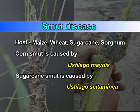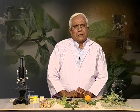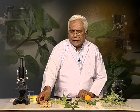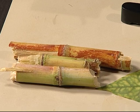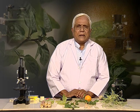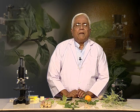Another disease is smut disease, caused by a fungus. It usually affects grasses like maize, wheat, sugarcane, and sorghum — all economically important food crops. Corn smut is caused by Ustilago maydis, whereas in sugarcane the smut disease is also caused by Ustilago. We also have one more example of fungal disease: red rot of sugarcane, caused by the fungus Colletotrichum falcatum. Whenever the fungus infects, the yield decreases because it blocks the vascular elements.